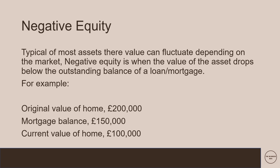As well as positive, equity can also be negative. Typical of most assets, their value can fluctuate depending on the market. Negative equity is when the value of the asset drops below the outstanding balance of a loan or mortgage. Using similar numbers from the previous example: we have a home valued at £200,000 when bought, with a mortgage of £150,000. However, the housing market has just crashed, and the current value of the home is now £100,000. This would put us in negative equity, as the outstanding balance on the mortgage is worth more than the asset we have.